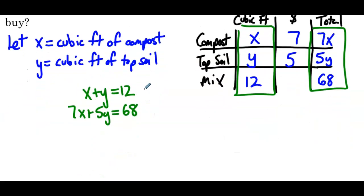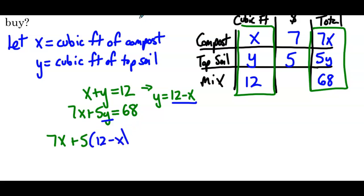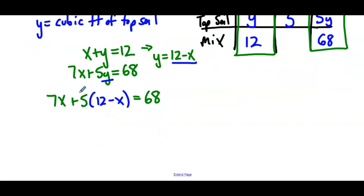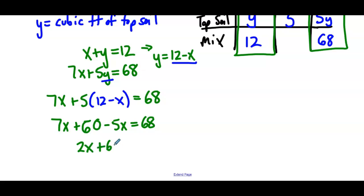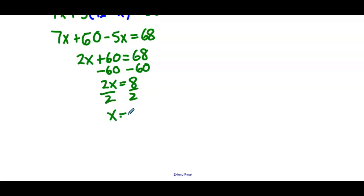Let's use substitution. Subtract x from both sides of the first equation: y equals 12 minus x. Substitute that into the second equation: 7x plus 5 times (12 minus x) equals 68. Distribute the 5: 7x plus 60 minus 5x equals 68. Combining like terms on the left side: 2x plus 60 equals 68. Subtract 60 from both sides: 2x equals 8. Divide both sides by 2: x equals 4.